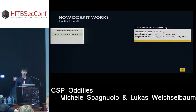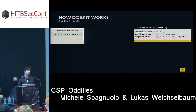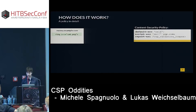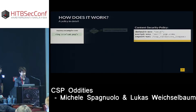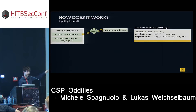Here is an example policy. default-src is the fallback bucket — everything not specified in a finer-grained way falls into default-src. 'self' means the same origin. So this policy will allow content from the same origin, allow scripts from the same origin and from yep.com, and will also send violation reports to a CSP violation logger on the same domain. For example, loading a cat image on money.example.com is allowed because image-src falls back to default-src, which allows 'self'.